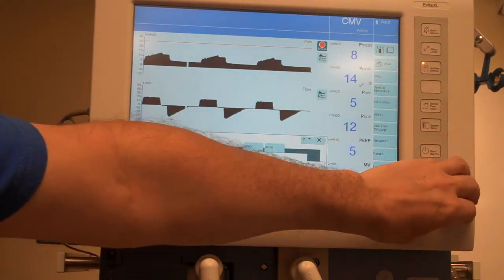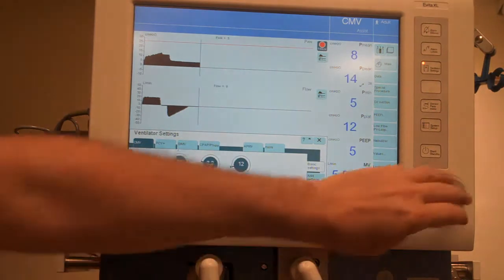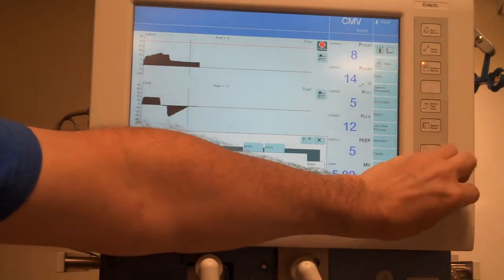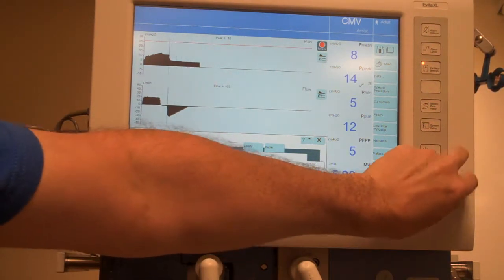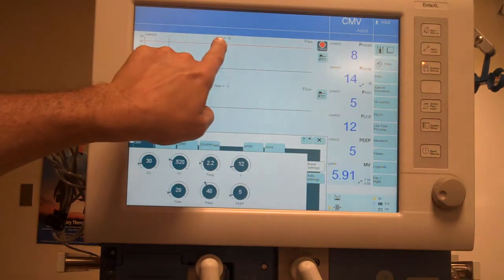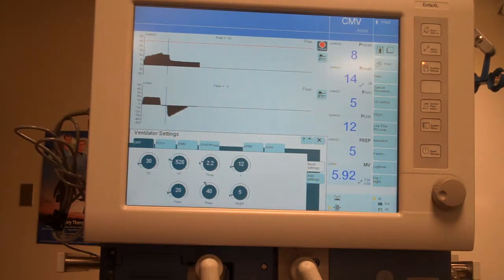To actually measure what the plateau pressure is, we can see that it is displayed here as P plat. If not, I can go ahead and freeze my graphic and now utilize this to go back and see what this value is right here. This airway pressure of 12, so that is my plateau pressure.